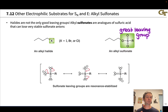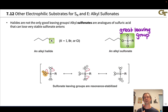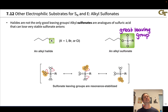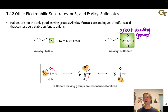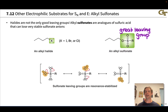Sulfonates are great leaving groups, just like halides, because the sulfonate anion is resonance stabilized. The structural pattern of two double bonds to oxygen and one single bond to an oxygen with negative charge creates resonance delocalization of that negative charge over all three oxygens. This is quite similar to sulfate — not quite as stable as the sulfate anion, but in the same ballpark. The conjugate acids of these sulfonate anions are generally strong acids.